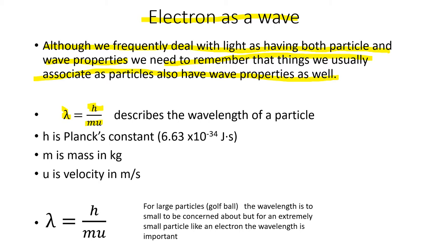Let's go through the pieces quickly. H is Planck's constant — a very, very small number that will play a key role. M is the mass in kilograms, and u is the velocity in meters per second. For large macroscopic objects, we could use this equation, but the wavelengths come out so small that we don't have to treat them as waves at all.